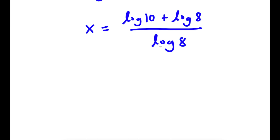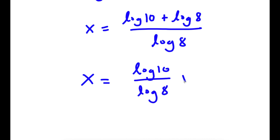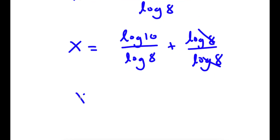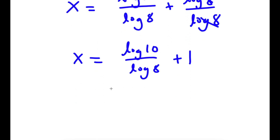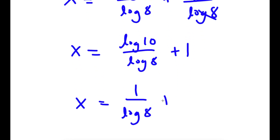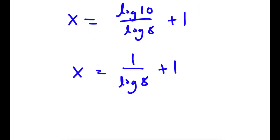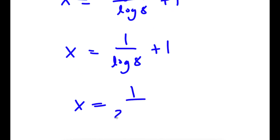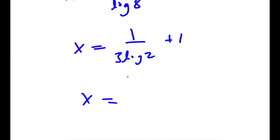So now to solve this, I'm going to rewrite this as log 10 over log 8 plus log 8 over log 8. Now, anything divided by itself is 1, so log 8 over log 8 cancels out. So now I have log 10 over log 8 plus 1, and log 10 is also 1, so I have x is equal to 1 over log 8 plus 1. So log 8 — that's the same thing as 3 times log 2, which is equal to 2.1074.